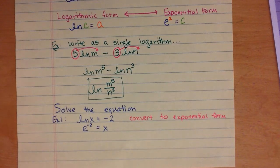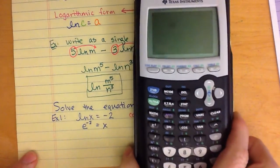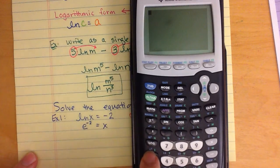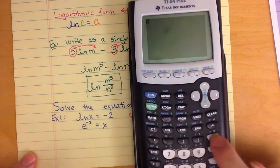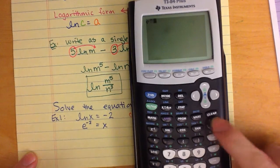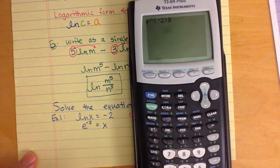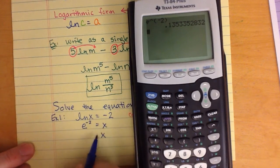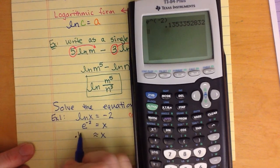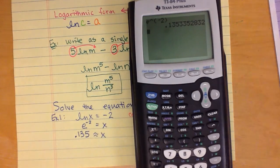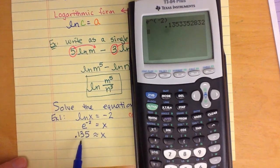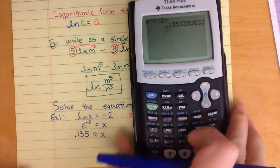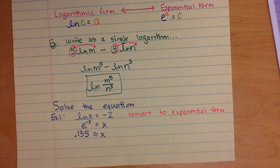If you need a decimal form for your answer, you'll need to use your calculator. The e button is available in a couple of places on the calculator. Using e to the power of negative 2 gives x approximately equal to 0.135. Pay attention to whether your question is asking for an exact answer — which would be e to the negative 2 — or a decimal approximation of 0.135, and also how many decimal places are required.